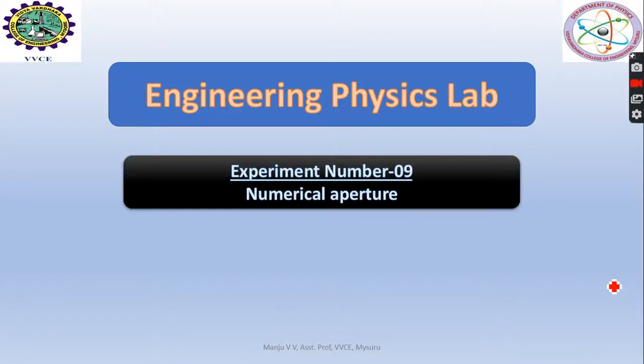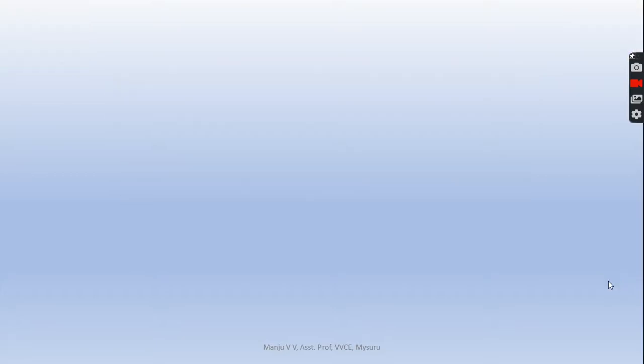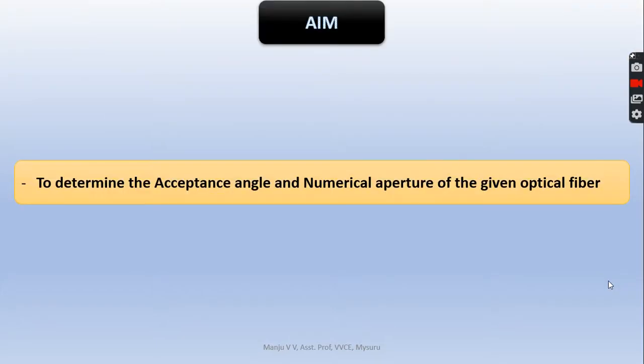Engineering Physics Lab Experiment 9: Numerical Aperture. The aim of the experiment is to determine the angle of acceptance and the numerical aperture of an optical fiber.